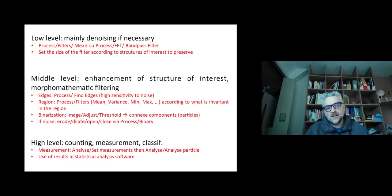After this, you can binarize your image by Image > Adjust > Threshold and you'll have access to the connected components, to the different particles that you can analyze. If there's remaining noise, you can remove it by erosion, dilation, opening, and closing via the menu Process > Binary.